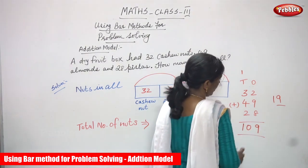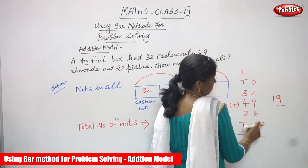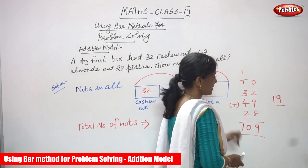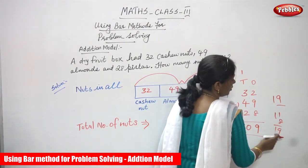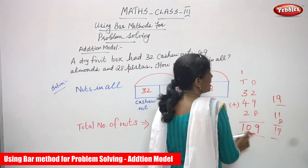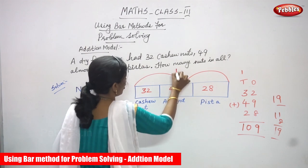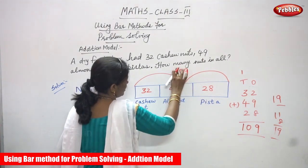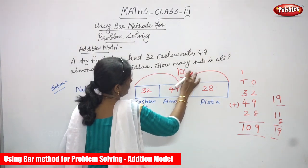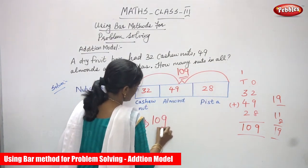So 2 plus 9 is 11, and 11 plus 8 is 19. That means 1 ten and 9 ones. I write 9 in the ones place, and the 1 is the carry over to the tens place. Then: 1 plus 3 is 4, 4 plus 4 is 8, and 8 plus 2 is 10. The answer is 109. This is the right answer — 109 — the total number of nuts.